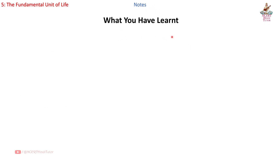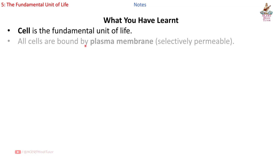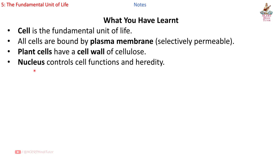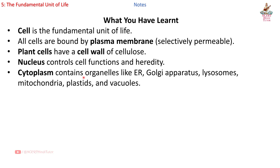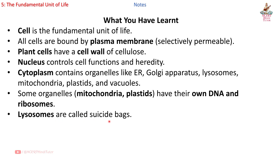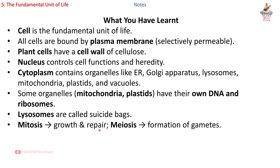What you have learned: Cell is the fundamental unit of life. All cells are bound by a selectively permeable plasma membrane. Plant cells have a cell wall of cellulose. Nucleus controls cell functions and heredity. Cytoplasm contains organelles like ER, Golgi apparatus, lysosomes, mitochondria, plastids, and vacuoles. Some organelles — mitochondria and plastids — have their own DNA and ribosomes. Lysosomes are called suicide bags. Mitosis is for growth and repair; meiosis for formation of gametes.